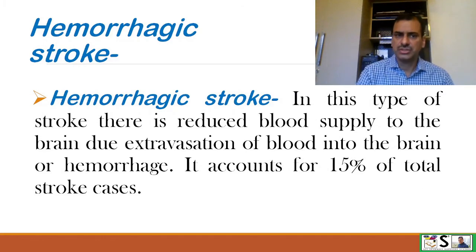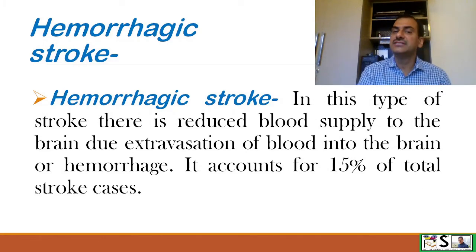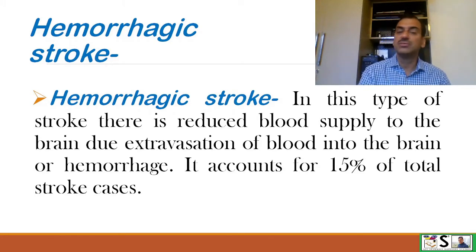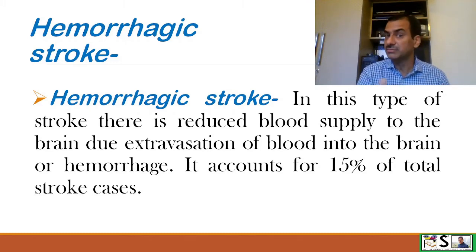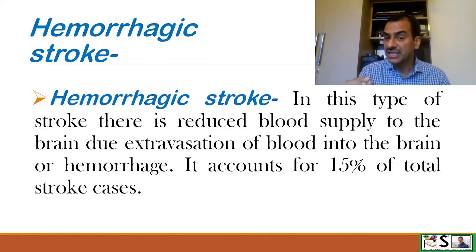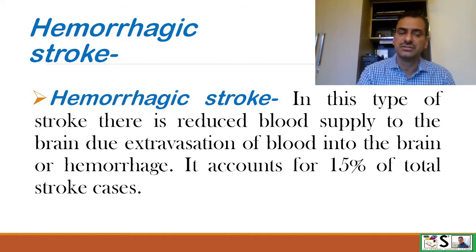Hemorrhagic stroke, as the name suggests, involves brain hemorrhage. In this type of stroke, there is reduced blood supply to the brain due to extravasation of blood into the brain tissue. It accounts for 15% of total stroke cases.